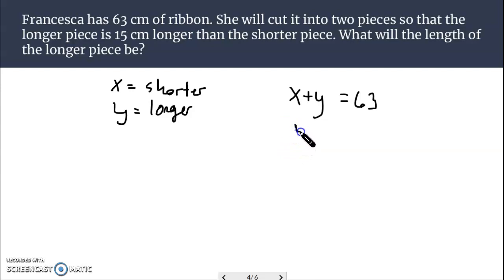Together, if you take the short and the long, it makes the full 63 centimeters of ribbon. They do say the longer piece, y, is 15 centimeters more than the shorter piece. y equals 15 plus x. All right, so there's our system.